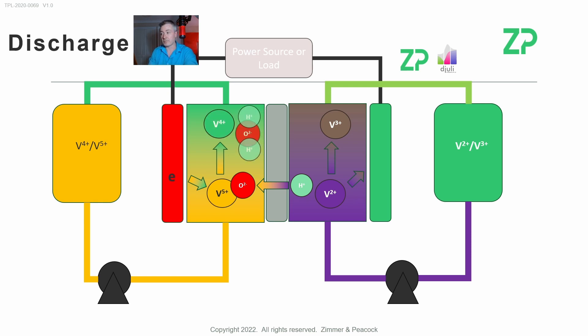an electron and became vanadium four plus (V4+). So that's the discharge cycle of a